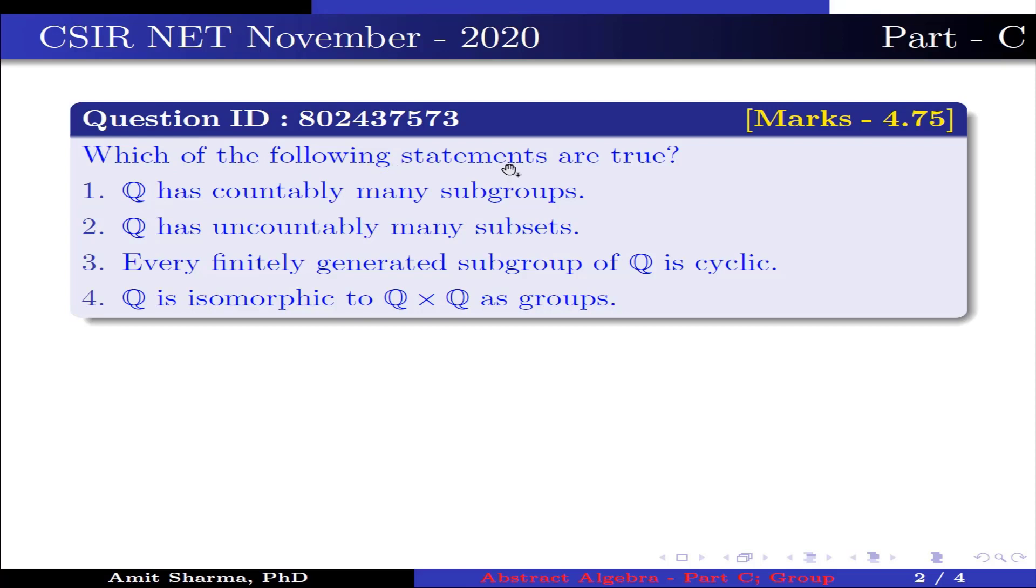The question is: which of the following statements are true? Option 1: Q has countably many subgroups. Option 2: Q has uncountably many subsets. Option 3: every finitely generated subgroup of Q is cyclic. Option 4: Q is isomorphic to Q × Q as a group.